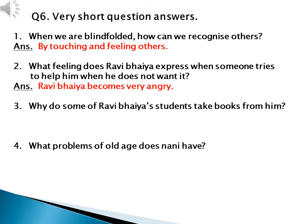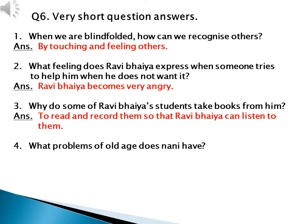Number three: why do some of Ravi bhaiya's students take books from him? Answer is to read and record them so that Ravi bhaiya can listen to them. Number four: what problems of old age does nani have? Answer: nani has back pain and is also not able to see and hear properly.